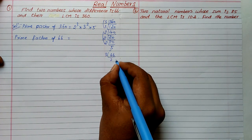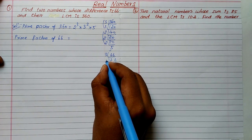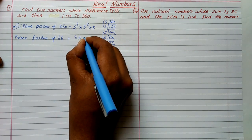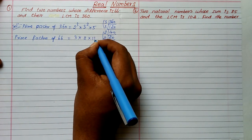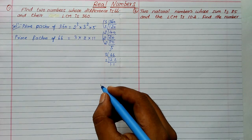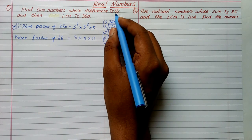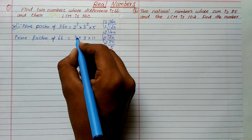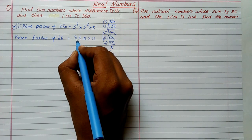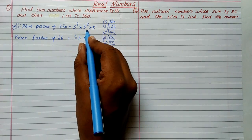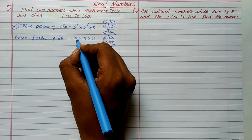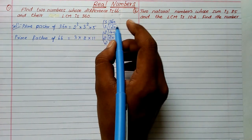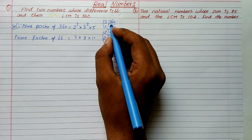Next we find the prime factors of 66. Three goes in two times and two goes eleven times, so 66 = 3 × 2 × 11. Now comparing the two factorizations: both have 3 and 2 as common factors, but 11 is only in 66 and 5 is only in 360. So the additional factor here is 5.